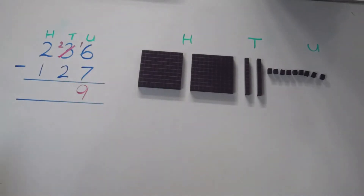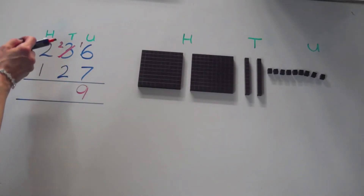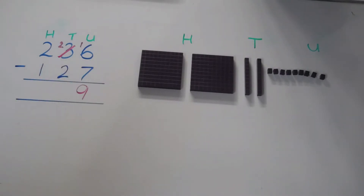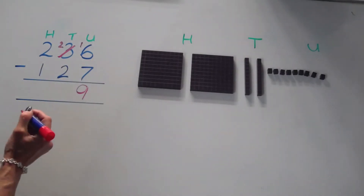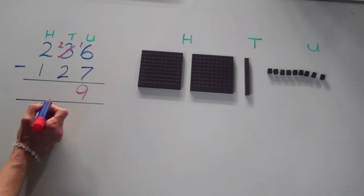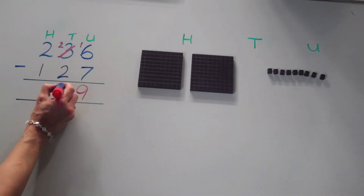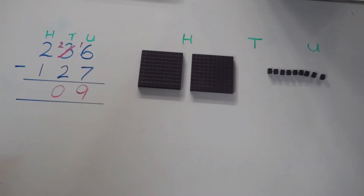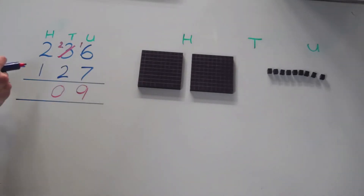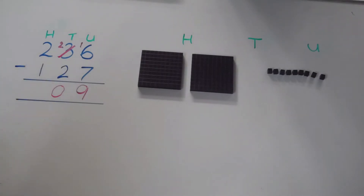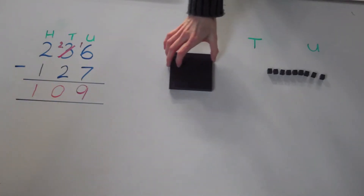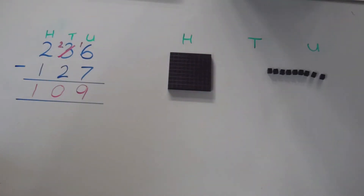Now we'll move on to the tens column. We now have two tens and we need to take away two tens — two take away two leaves us with zero. And finally the hundreds column: we have two hundreds and we need to take away one hundred. One hundred from two hundred leaves us with one hundred. And there we have our answer: one hundred and nine.